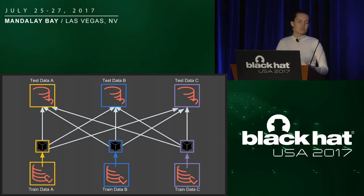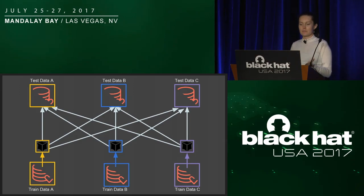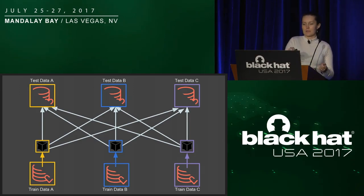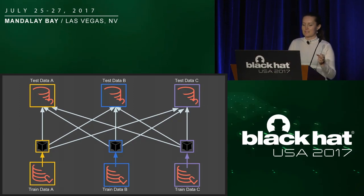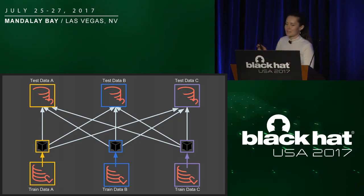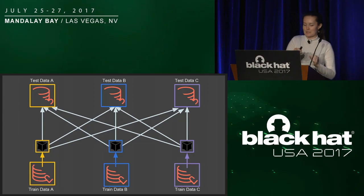Here's a visualization of this analysis. Say we have three data sets — we build models A, B, and C, each trained on their own set, and then we test each model on the test set from all three data sets. So we get N-squared — nine sets of accuracy metrics.